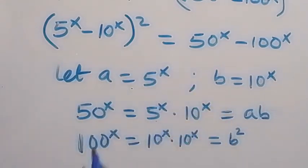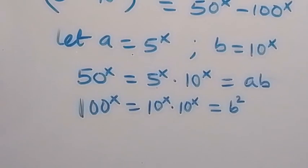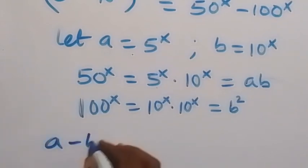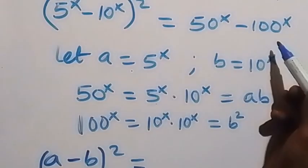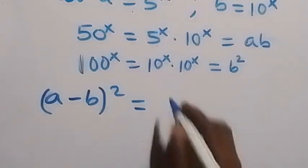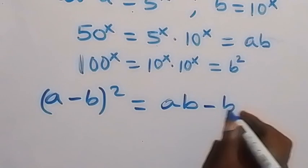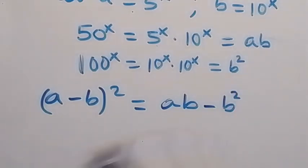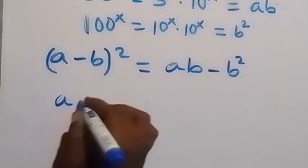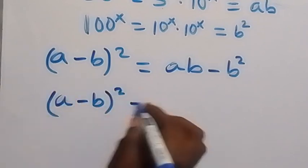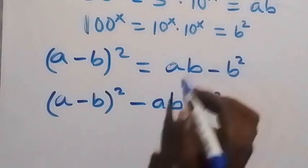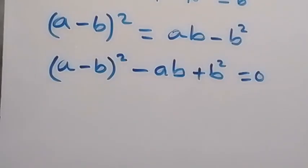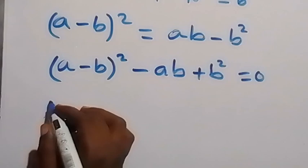So we have a minus b, all squared, equals ab minus b squared. Taking everything to one side, we get a minus b squared minus ab plus b squared equals zero, which simplifies to a minus b, all squared, minus b times a minus b equals zero.